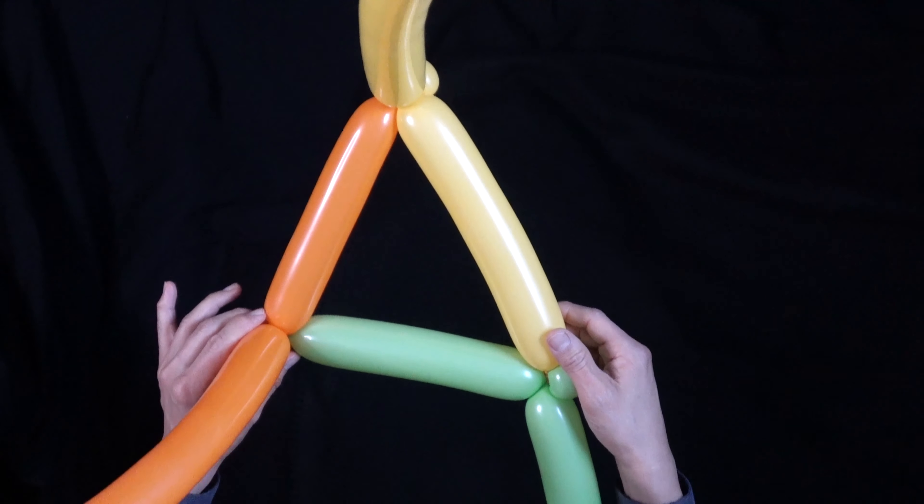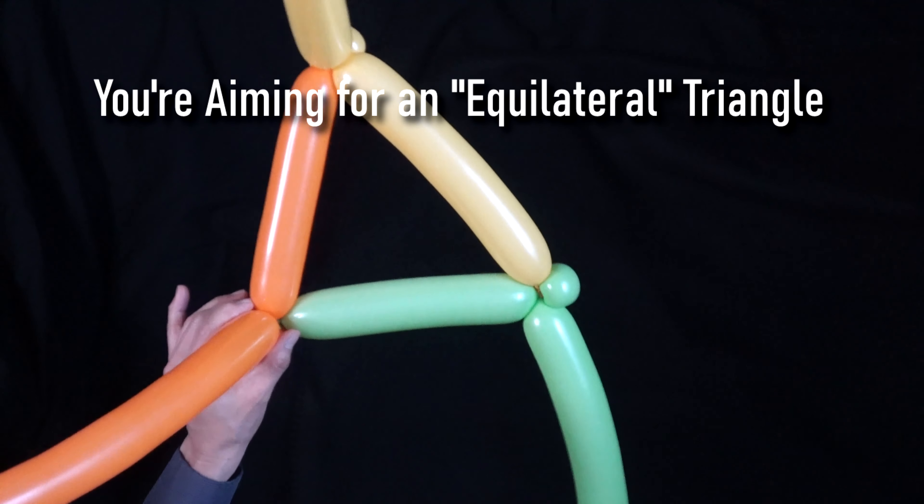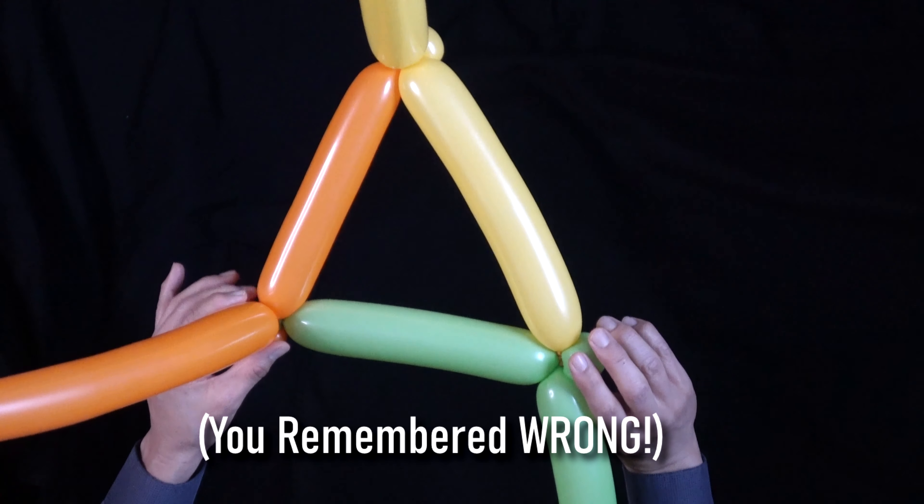It's nice if it's pretty even. I guess you call that an isosceles triangle, if I remember back from geometry. Way back.